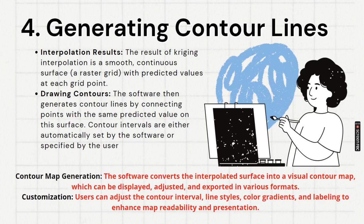Afterwards, filling with color. The software converts the interpolated surface into a visual contour map which can be displayed, adjusted, and exported in various formats. And further you can customize. You can change line styles, color gradients, labeling. Those things are very easy to carry out. So many things can be done in a few minutes.